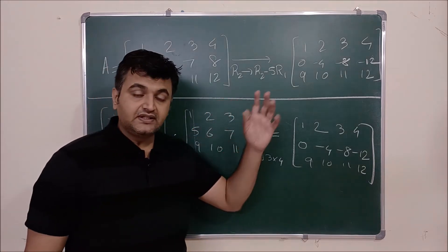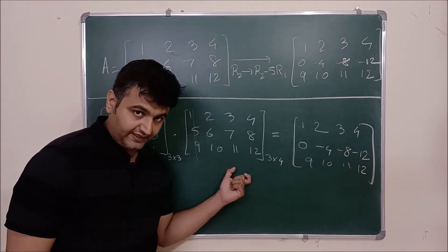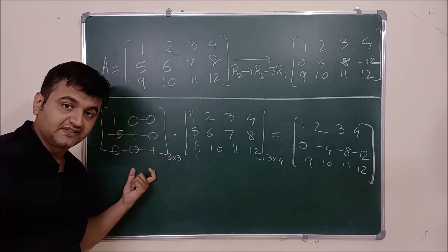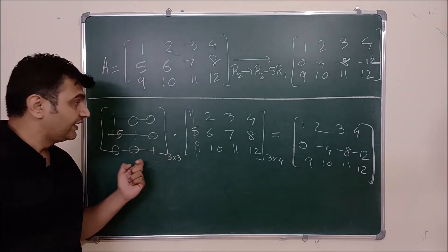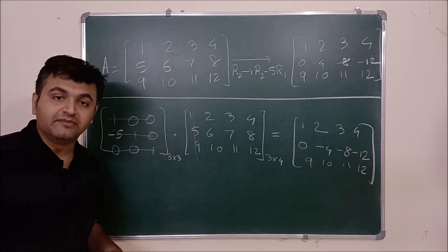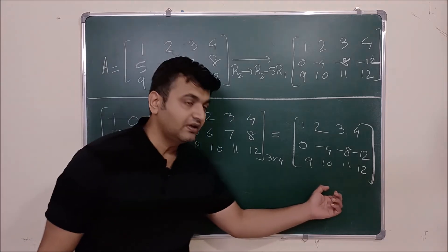So you can see, doing the row operation is same as you pre-multiply your matrix with a nice matrix. What is that nice matrix? You apply the same row operations on the identity matrix. And that's how you get your answer.